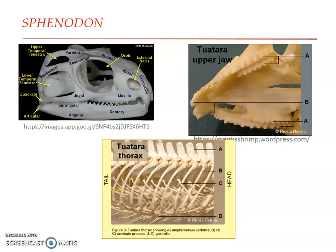Unlike many reptiles, Sphenodon does not have any visible tympanic membrane on either side of the head. The tympanic membrane is present but covered with a layer of skin, so it is completely enclosed and hence not fully functional — it can hear only frequencies from 100 to 800 Hz. The middle ear bones and hair cells are all primitive and unspecialized, representing primitive characters retained in Sphenodon.